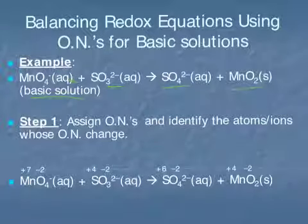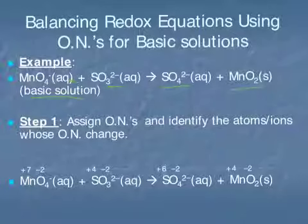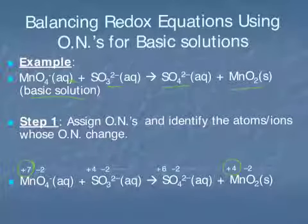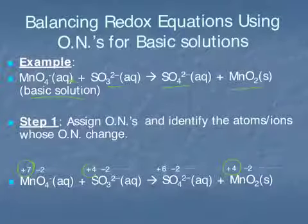We can assign oxidation numbers based on our oxidation number rules. We notice that the oxidation number for manganese has gone from +7 to +4, and the oxidation number for sulfur has gone from +4 to +6.